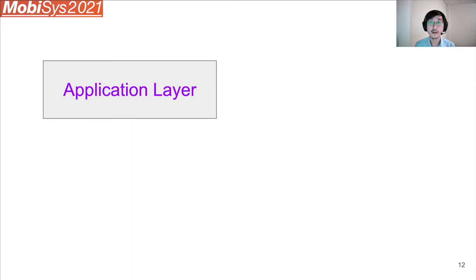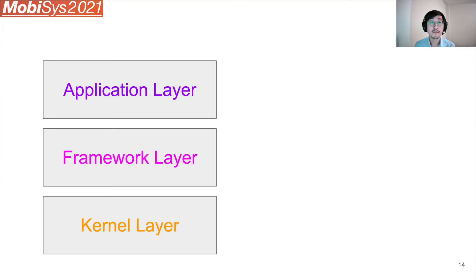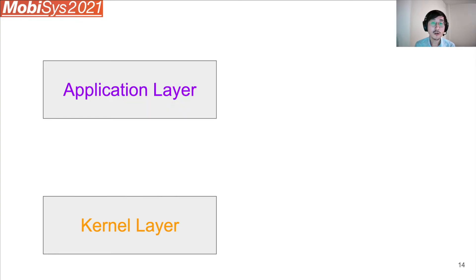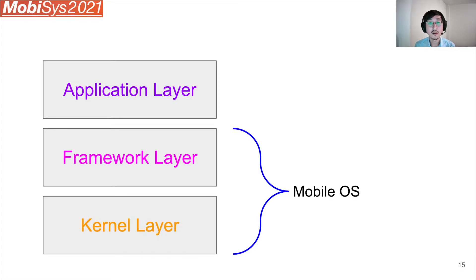If you consider the whole mobile system stack, there are really three layers: the application layer, the framework layer, and the kernel layer. The application layer obviously has applications. The framework layer has user space system services and libraries. The kernel layer has kernel space system services. What we conventionally call a mobile operating system includes the framework layer and the kernel layer. Depending on which layer you choose to implement resource sharing, you will face very different challenges and need to make very different design decisions, and in the end you will get a vastly different system.